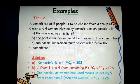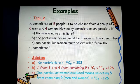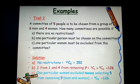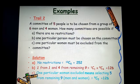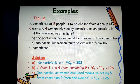Now, C. One particular woman must be excluded from the committee. So, excluded means you take her out completely. She is not considered. So, if you take her out completely, we are left with 9 people to be selected from. So, selecting 5 from 9 gives us 9 combination 5. That is 126.